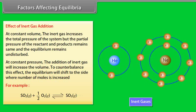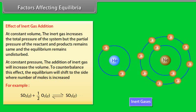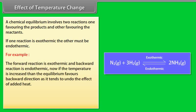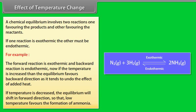The addition of an inert gas at constant pressure will push the equilibrium in the backward direction. Effect of Temperature Change: A chemical equilibrium involves two reactions — one favoring products (exothermic) and one favoring reactants (endothermic). If temperature is increased, equilibrium favors the backward direction as it tends to undo the effect of added heat. If temperature is decreased, equilibrium shifts in the forward direction. So, low temperature favors the formation of ammonia.